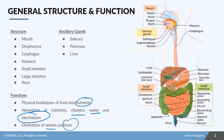The GI tract has lots of different parts: the mouth, the oropharynx, the esophagus, stomach, both the small and large intestine, and also the anus. There are also some glands associated with the GI tract called the ancillary glands. They help to break down food, especially through chemical processes. These are glands like the salivary glands, the pancreas, and the liver.